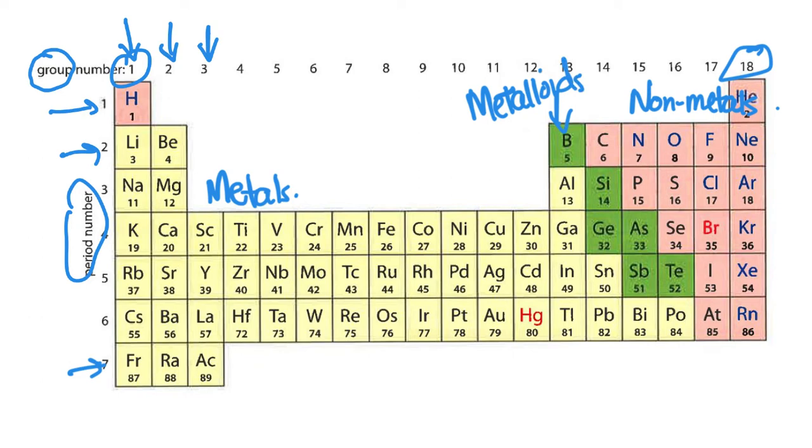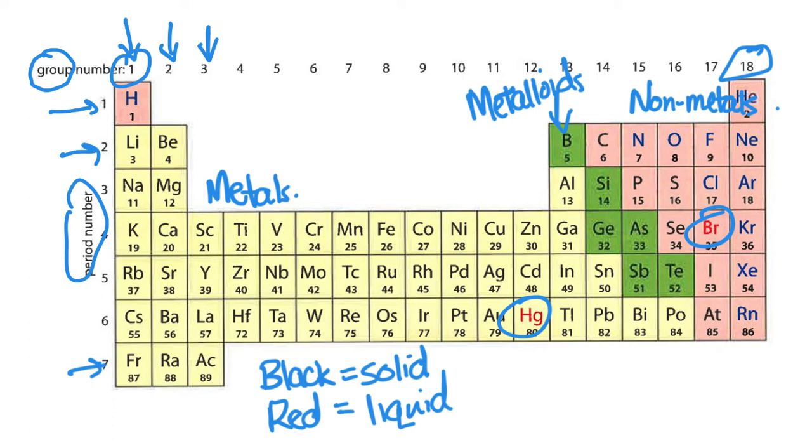If we take a look as well at our elements, any of the ones in black are solid at room temperature. Those that are in red, so that is mercury and bromine, are the only two that are liquid at room temperature. And then all of these ones on the right side that are blue are gases at room temperature.